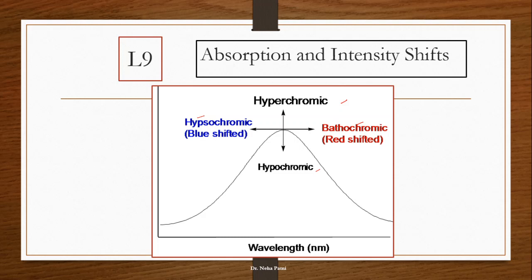Whenever there is a compound with a functional group, it might happen that the absorption shift takes place either to the left hand side or right hand side. At the same time, an intensity shift may take place, so the intensity may increase or the intensity of the band may decrease.